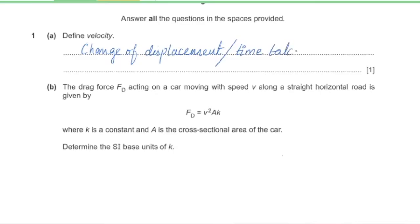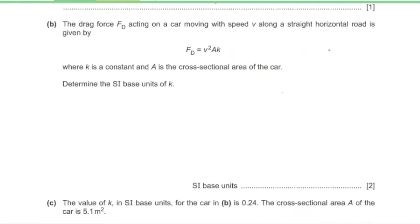Part B: the drag force acting on a car moving with speed v along a straight horizontal road is given by F equals K times v-squared times A, where K is a constant and A is the cross-sectional area of the car. Determine the SI base units of K, so K equals force divided by v-squared times A.